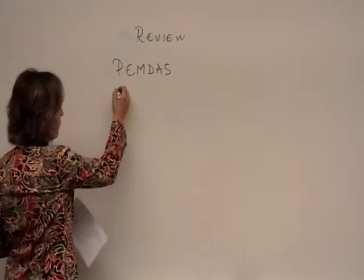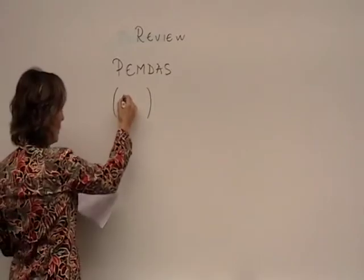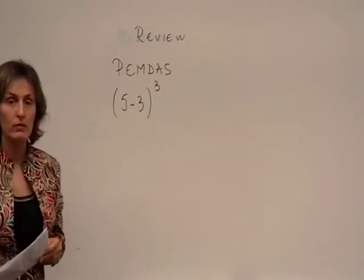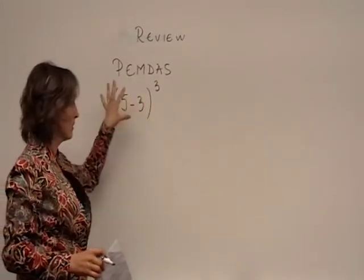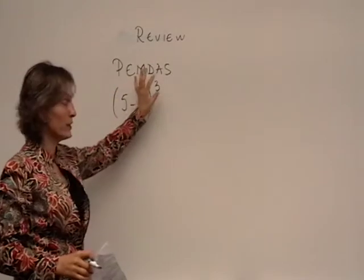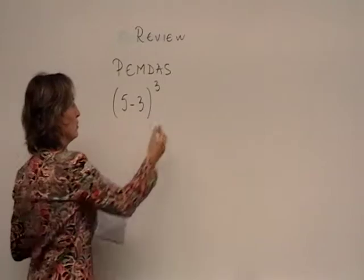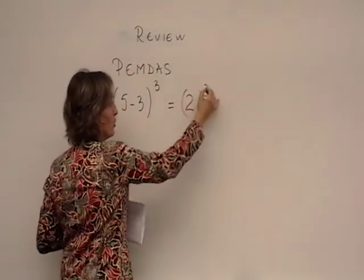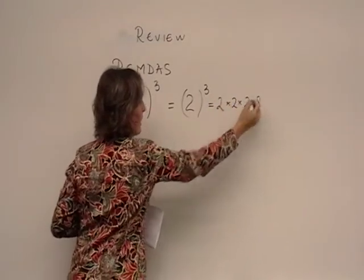So we went over a few examples to illustrate each one of those. For instance, (5-3)³, you do what first? We have two operations here: a parenthesis and an exponent. P goes first, so you have to do 5 minus 3 first, and then cubed, which means 2×2×2, and it's 8.